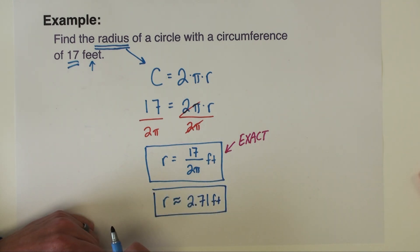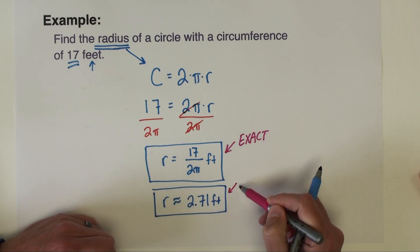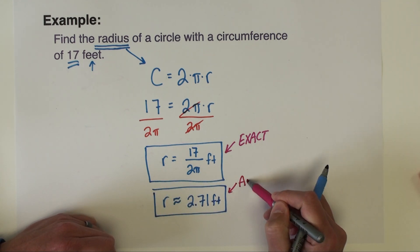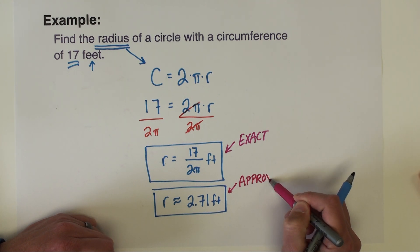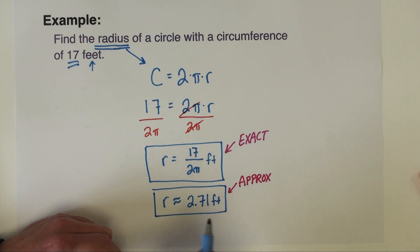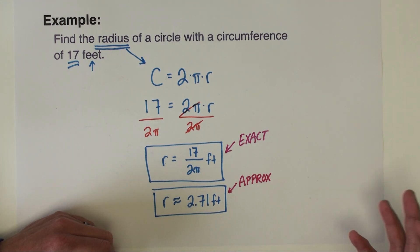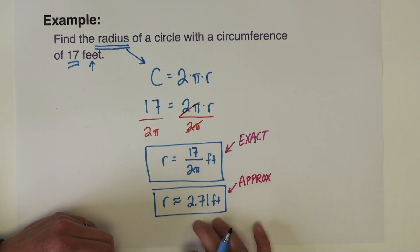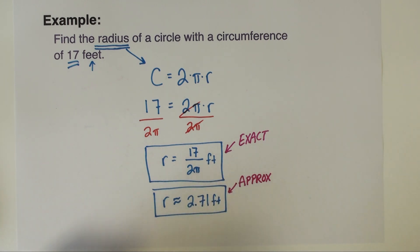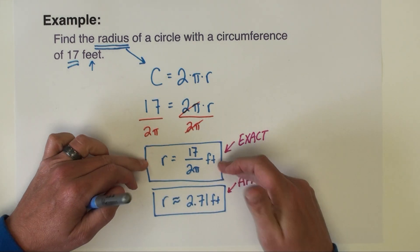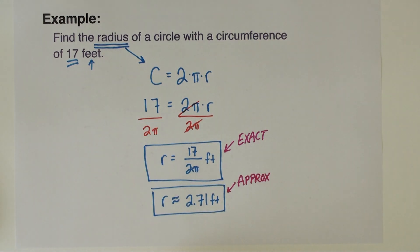Make sure you read your directions whatever type of problem you're doing — whether it's an online assessment, a test, a quiz, or a homework assignment. If it says 'approximate' or 'round,' compute the decimal. If it wants 'exact' or 'in terms of pi,' leave pi in your answer.